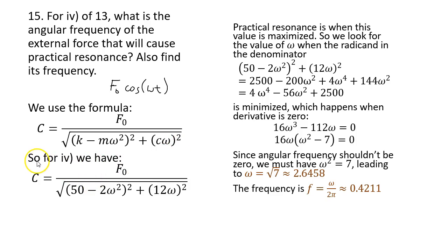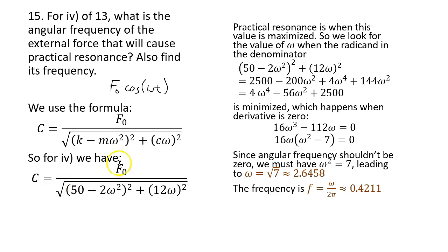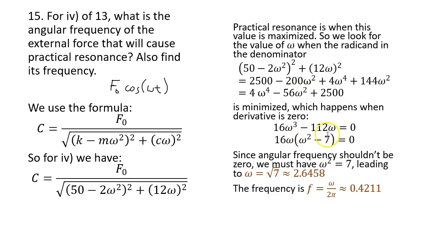Substituting m=2, c=12, k=50 into the amplitude formula, we want the ω that makes the entire expression largest. Since the amplitude expression has the quantity in the denominator, maximizing the amplitude means minimizing the denominator. To minimize, differentiate and set equal to zero to find critical points.